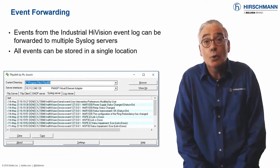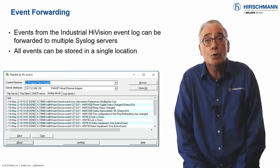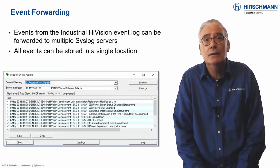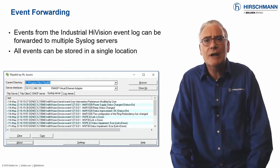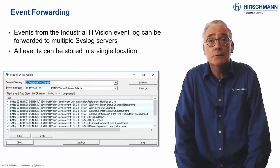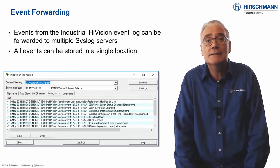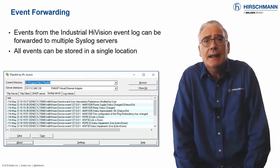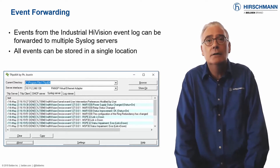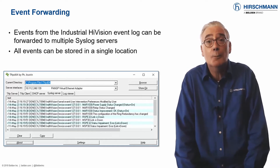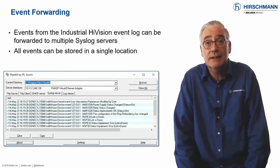The events stored by Industrial HiVision are intended to be used for short-term network administration and fault-finding. For long-term storage and analysis, it's common to use a central location to store all events. This location is typically a syslog server.